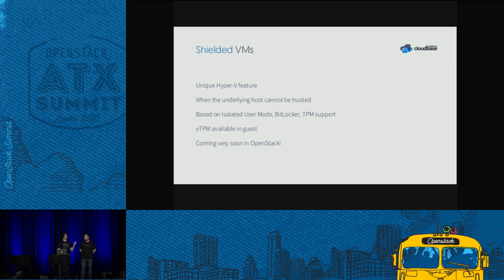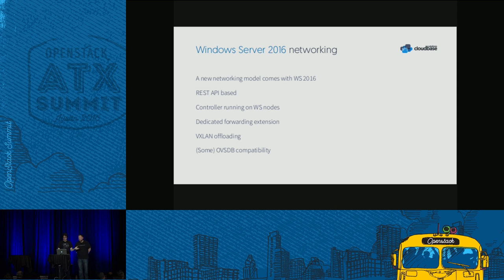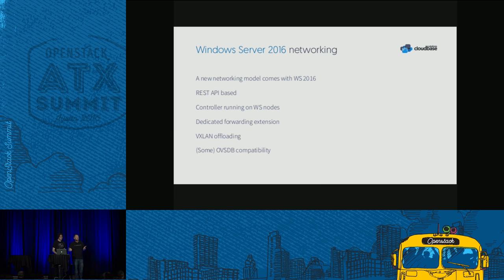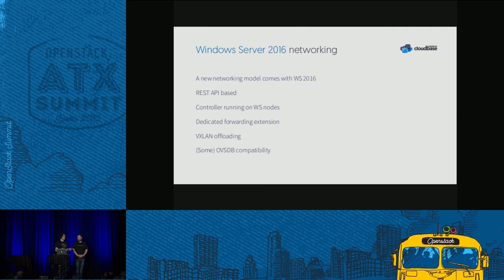For networking in Windows Server 2016, the networking model changes slightly. It's a REST API-based interface, the controller runs on Windows Server nodes, there's a dedicated forwarding extension, VXLAN offloading, and some OVSDB compatibility from the new native interface. This stuff will come in Newton as well — it's a new networking stack coming with Windows Server 2016.